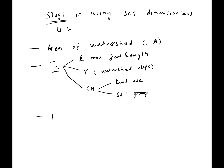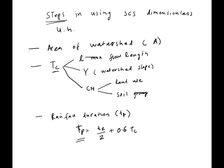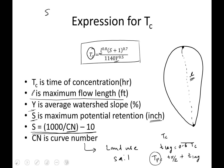Once you have the curve number you get the S parameter, which feeds into the time of concentration equation. You also need the rainfall duration tr. From these you calculate t_lag = 0.6·tc, then tp = tr/2 + t_lag, and then Qp = PRF · Area / tp.